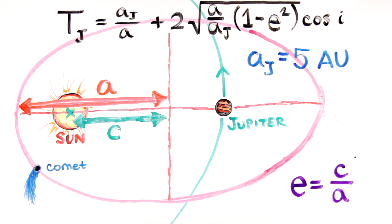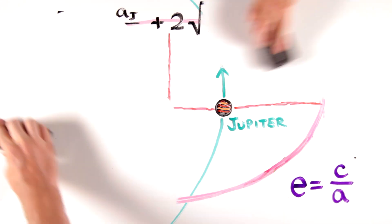Then, knowing the semi-major axis of Jupiter, which is the large body that will perturb the comet's orbital path, scientists can calculate Tisserand's parameter for an orbiting body, an asteroid or a comet.